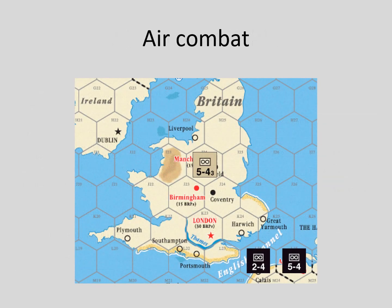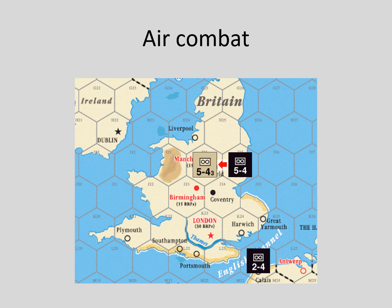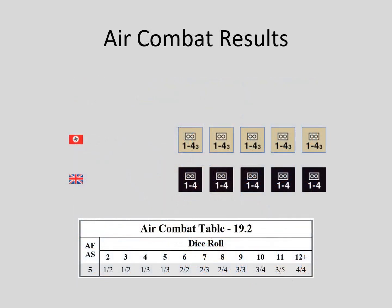We'll use the air combat from the counter air video for our example. Five German army air factors take on five British army air factors. The modifiers are equal. This graphic breaks down the 5-4 army air units so that the fate of each army air factor can be displayed. The German player rolls a 7 for a 2-3 result: two British army air factors are eliminated and three are forced to abort.